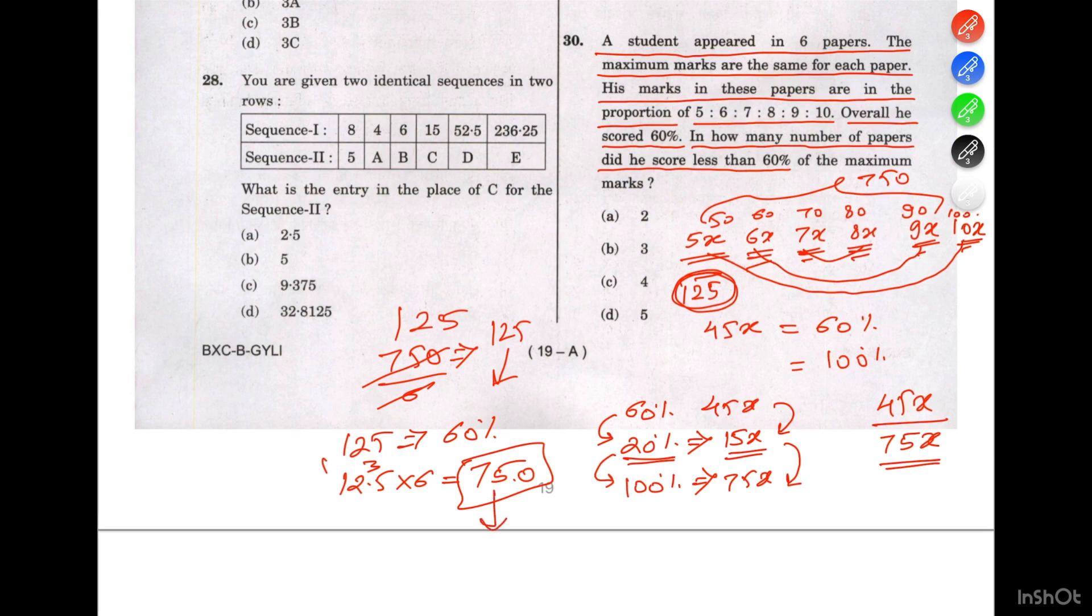We have to find in how many papers he scored less than 75. In the first paper he scored 50, so that's one. In the second he scored 60, that's two. In the third he scored 70, so that's three. In three exams or three papers he scored less than 75 or less than 60% of that paper. So the answer is B, three.